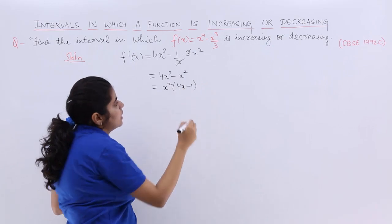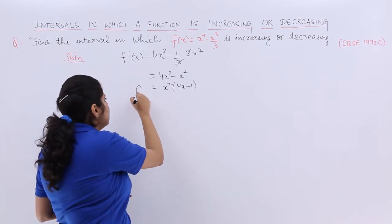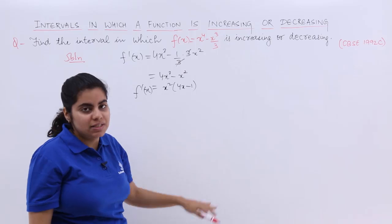So it is 4x^3 - x^2. Take x^2 common. So it is x^2(4x - 1). That is f'(x) and that completes my first step.